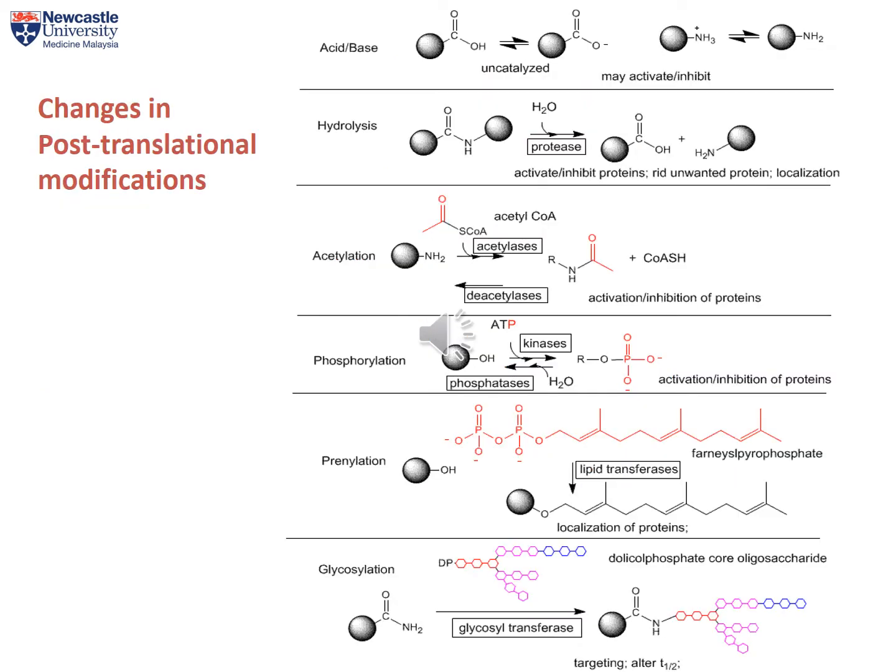What are the examples of post-translational modifications? You have acetylation, phosphorylation, prenylation, and glycosylation, which can all lead to protein misfolding when these processes become erroneous. In fact, phosphorylation of proteins is always used as a means of altering protein interactions during signal transduction. Acetylation is the addition or removal of an acyl group.